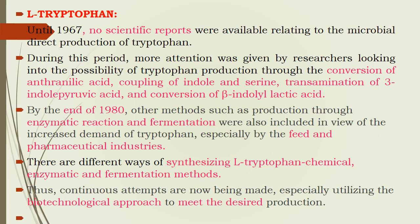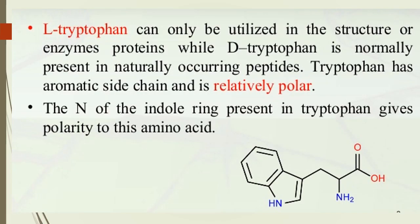By the end of the 1980s, enzymatic reactions as well as fermentation processes were carried out. Demand for tryptophan increased for animal feeds and pharmaceutical industries, driving the shift from chemical to enzymatic methods. Nowadays, many fermentation methods are utilized, including the use of genetically modified organisms to enhance tryptophan production.